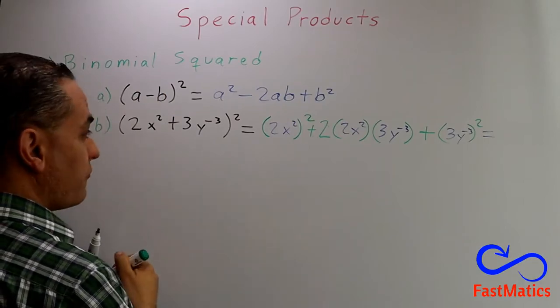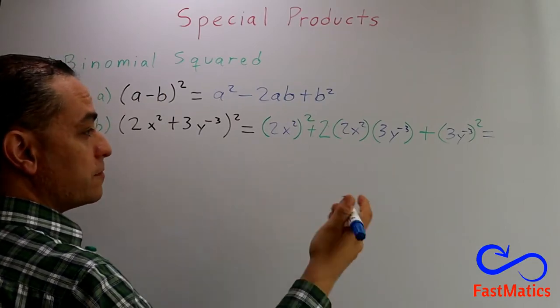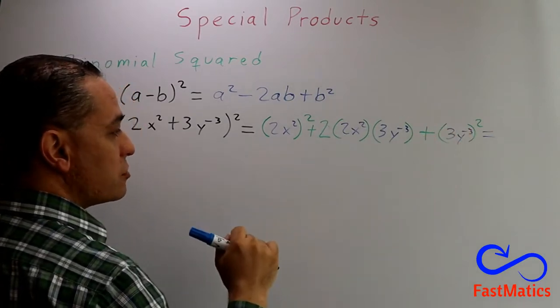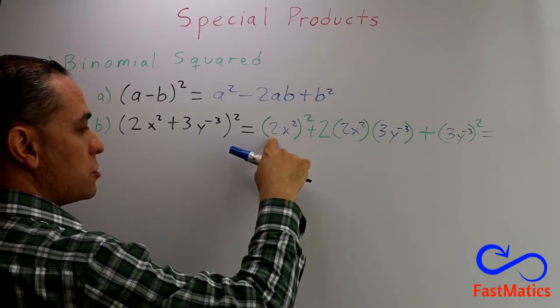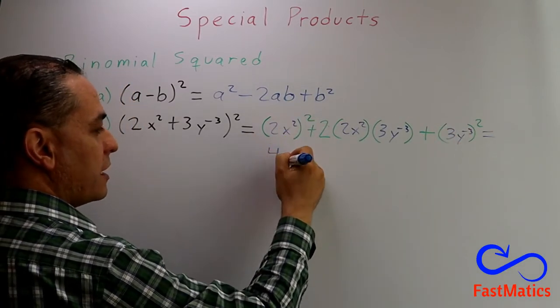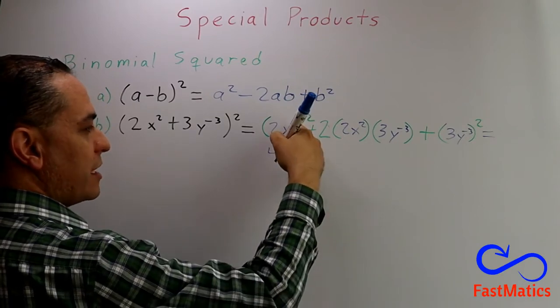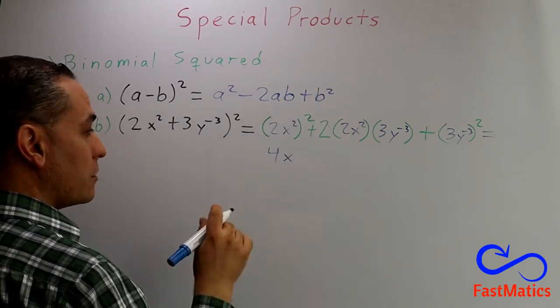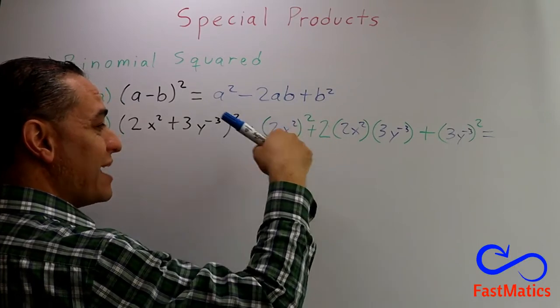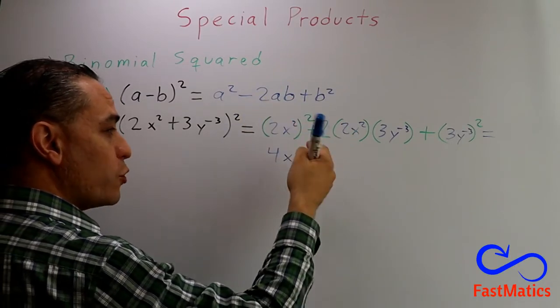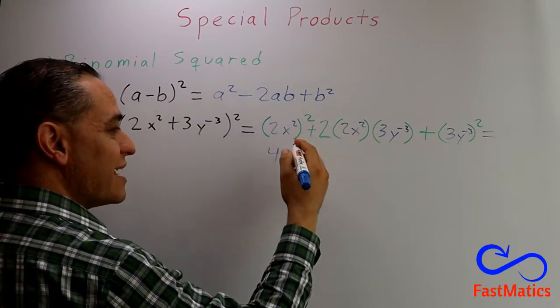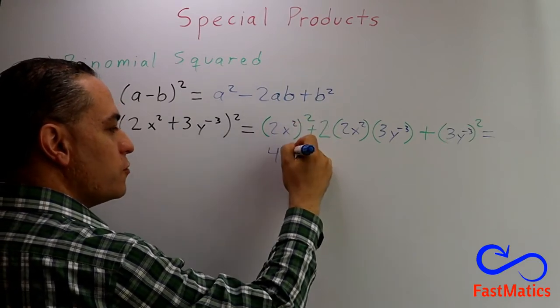Finally, you have to simplify or to calculate those expressions. 2 squared is 4. x squared squared. Remember, when you have one exponent rise to another exponent, you are going to multiply those exponents. 2 times 2, 4.